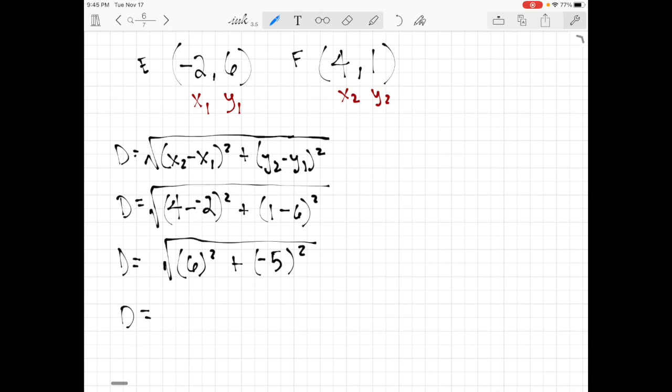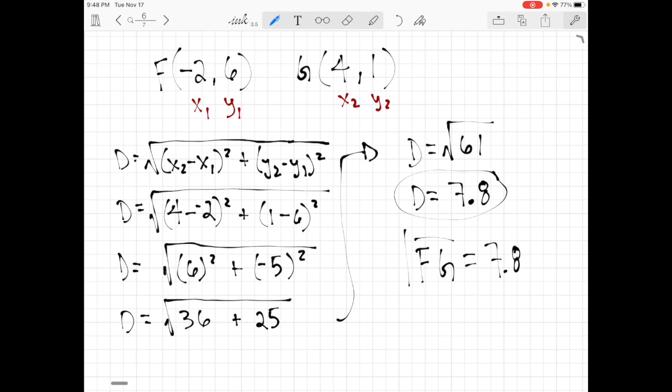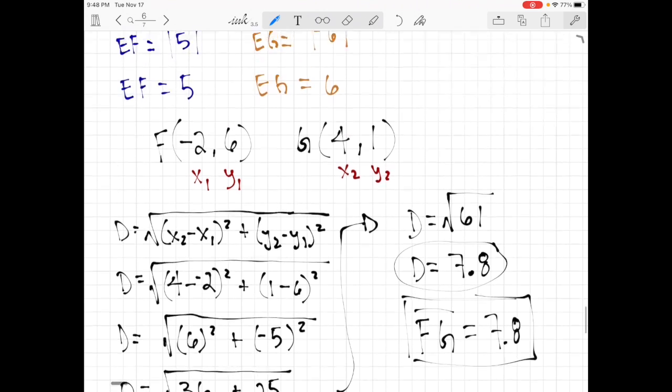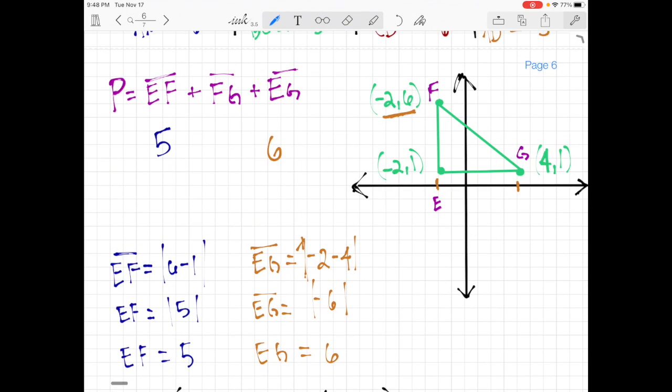So then we have D equals 36. That's six to the second power. And negative five to the second power is going to be a positive 25. We're going to add those together. And we're going to get 36 plus 25. So that's going to be D equals 36 plus 25 is going to be 61. And the square root of 61 is approximately 7.8. So our final answer is FG equals 7.8. And that's the length of FG. So I'm going to scroll back up here and say my length of FG here, that is 7.8.